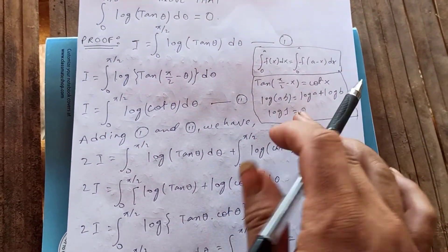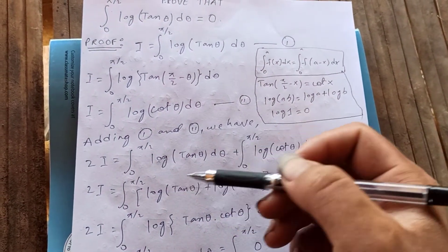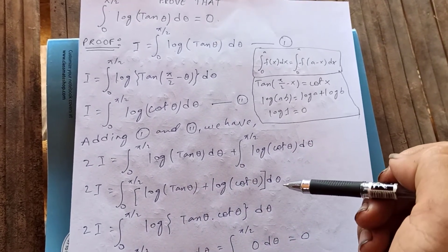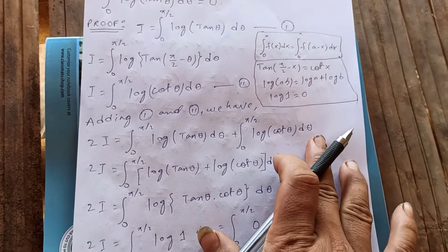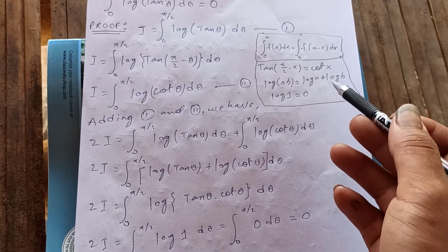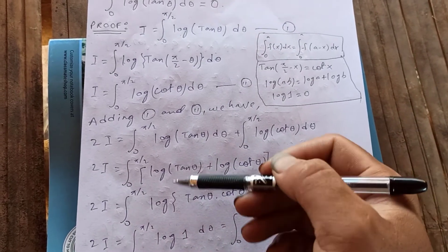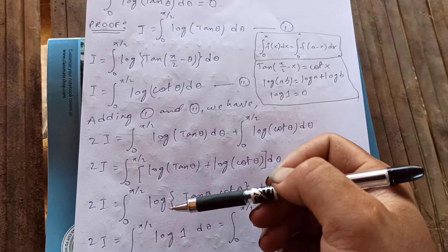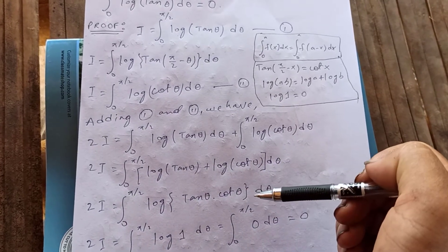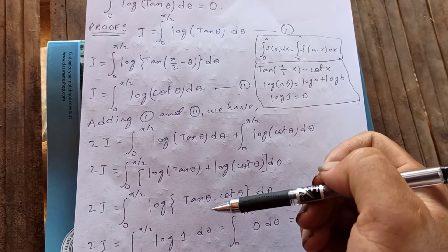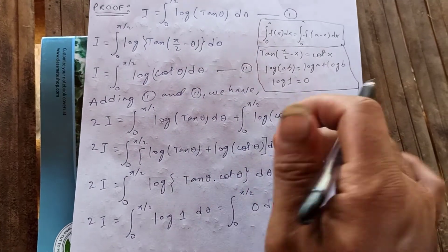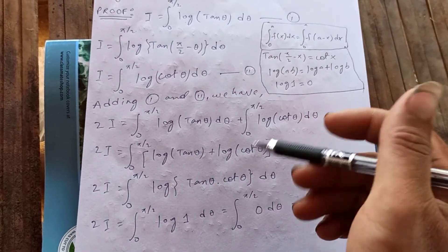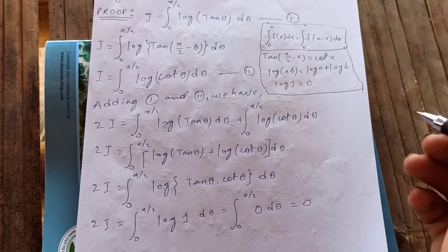So 2I equals the integral from 0 to pi over 2 of log(tan θ) plus log(cot θ) dθ. We know that log(a) + log(b) equals log(ab), so combining these two gives 2I equals the integral from 0 to pi over 2 of log(tan θ · cot θ) dθ, which equals the integral from 0 to pi over 2 of log(1) dθ.